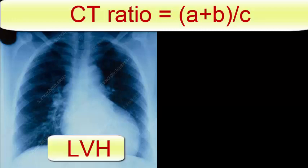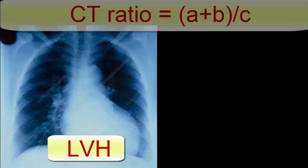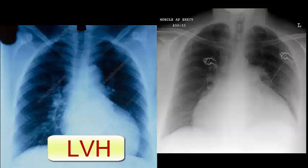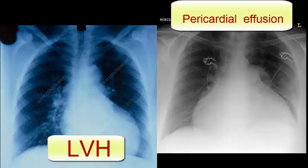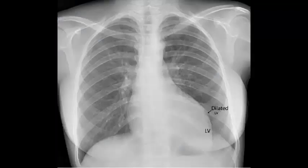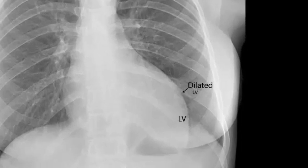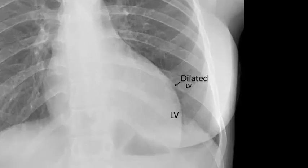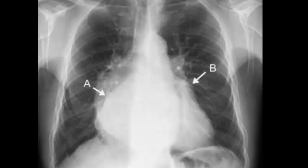Cardiomegaly can be caused by chamber dilatation, especially left ventricular dilatation, or by a pericardial effusion. We have to be mindful of artifacts that can alter this ratio, and in many patients with LV dysfunction the CT ratio may be normal. Dilatation of individual cardiac chambers can be recognized by characteristic alterations to the cardiac silhouette.